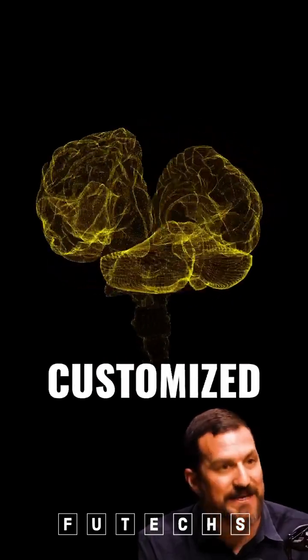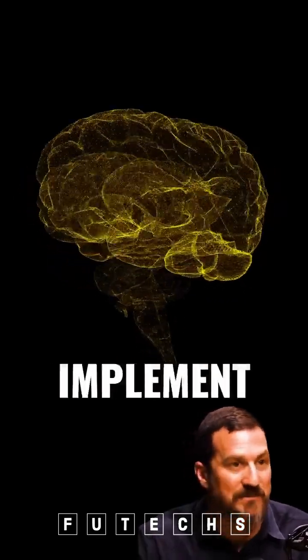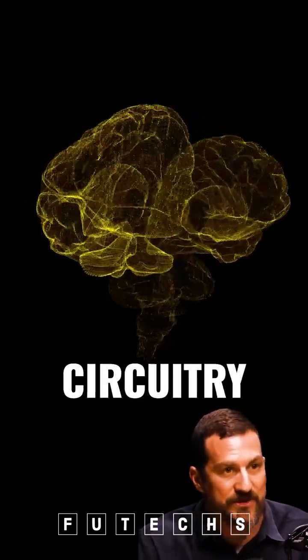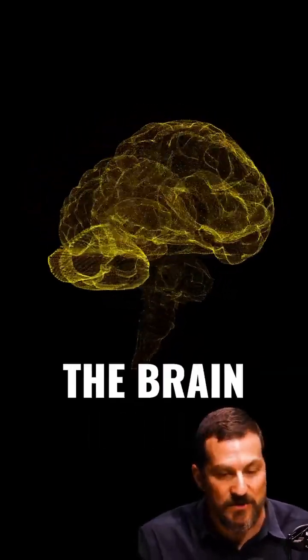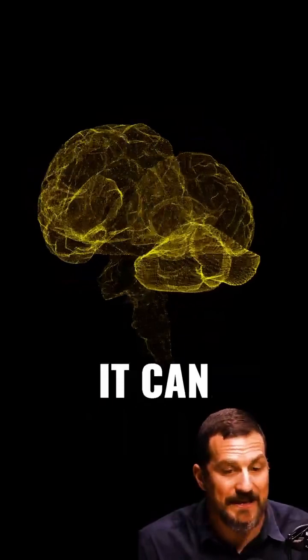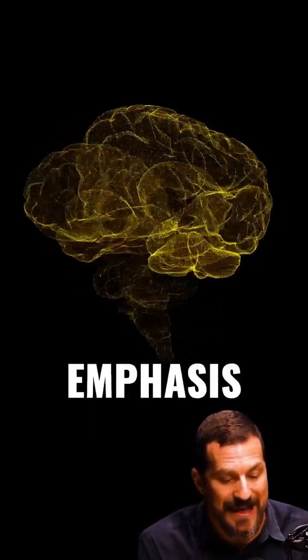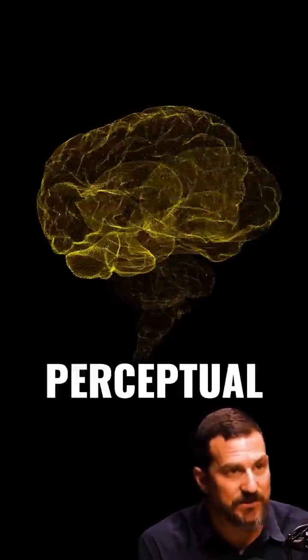The brain is basically designed to be customized in the early part of life and then to implement those algorithms and circuitry for the rest of its life. The brain can change in adulthood, provided that there's an emphasis on some perceptual event.